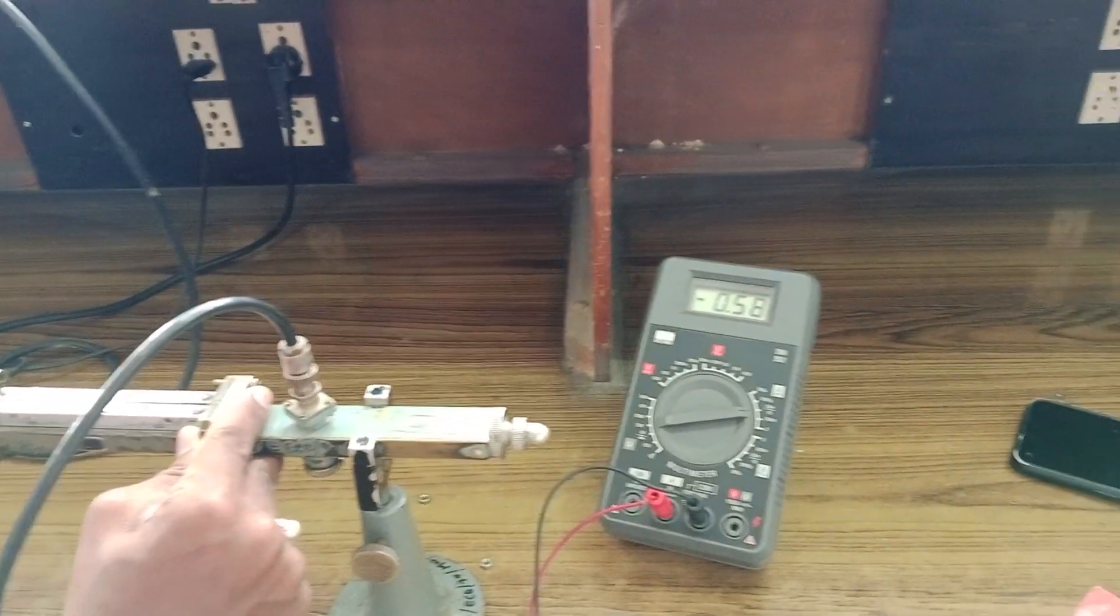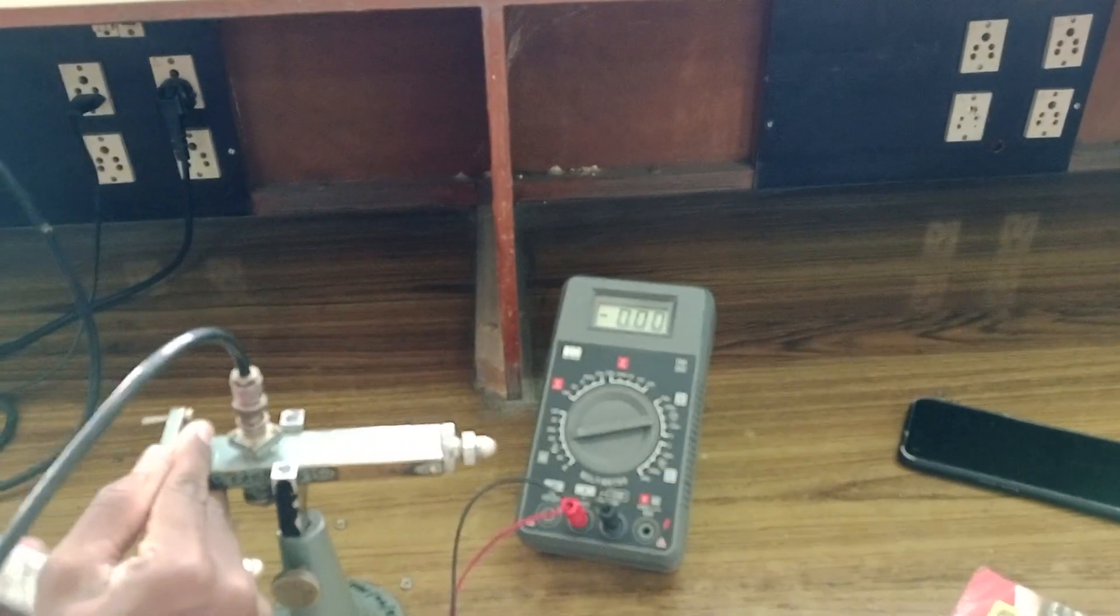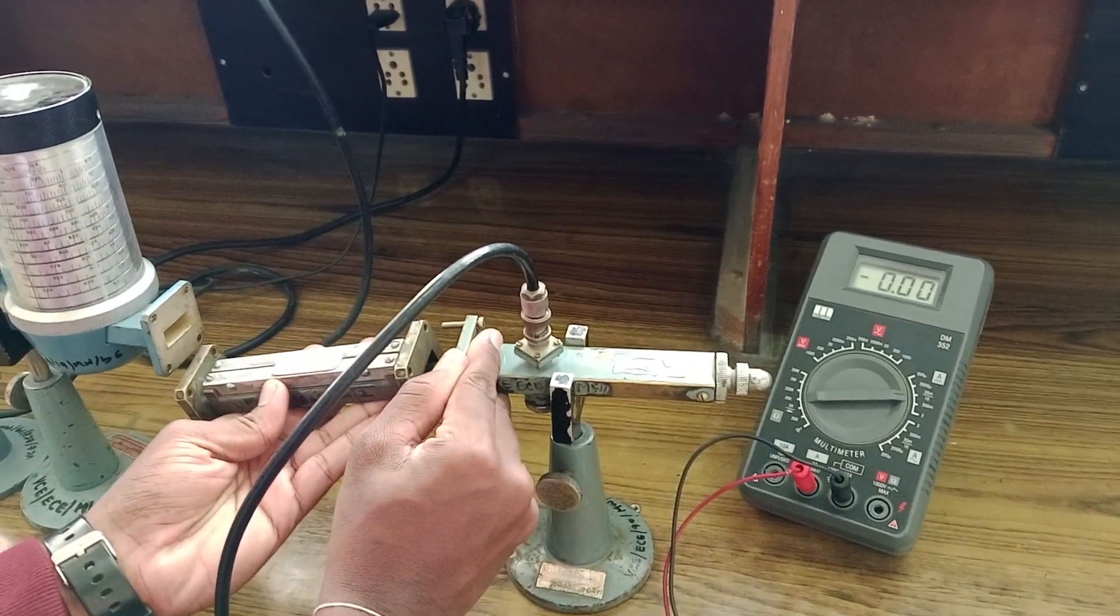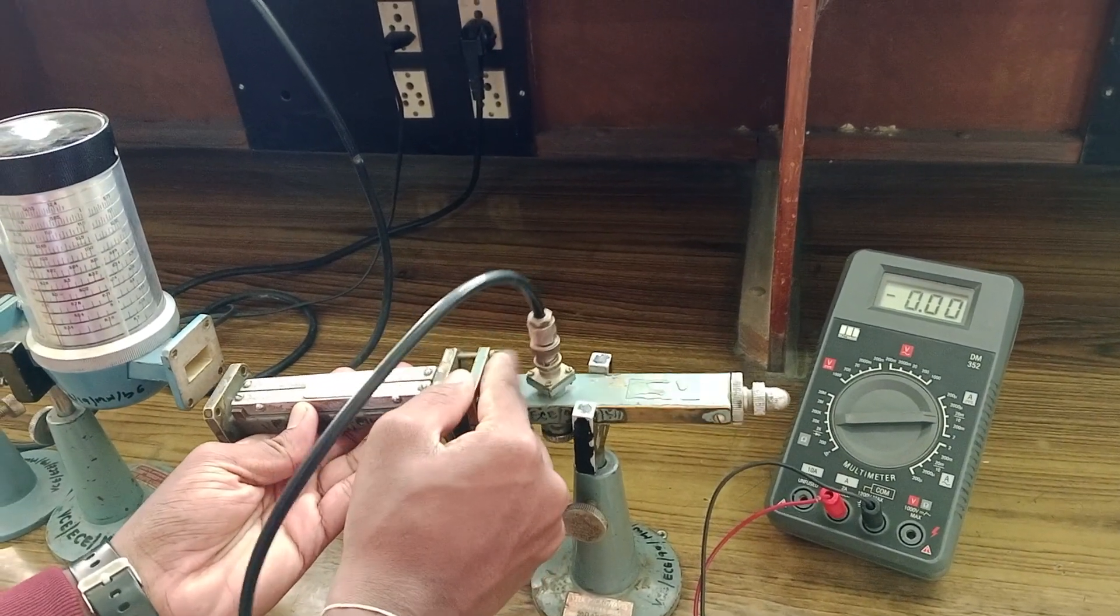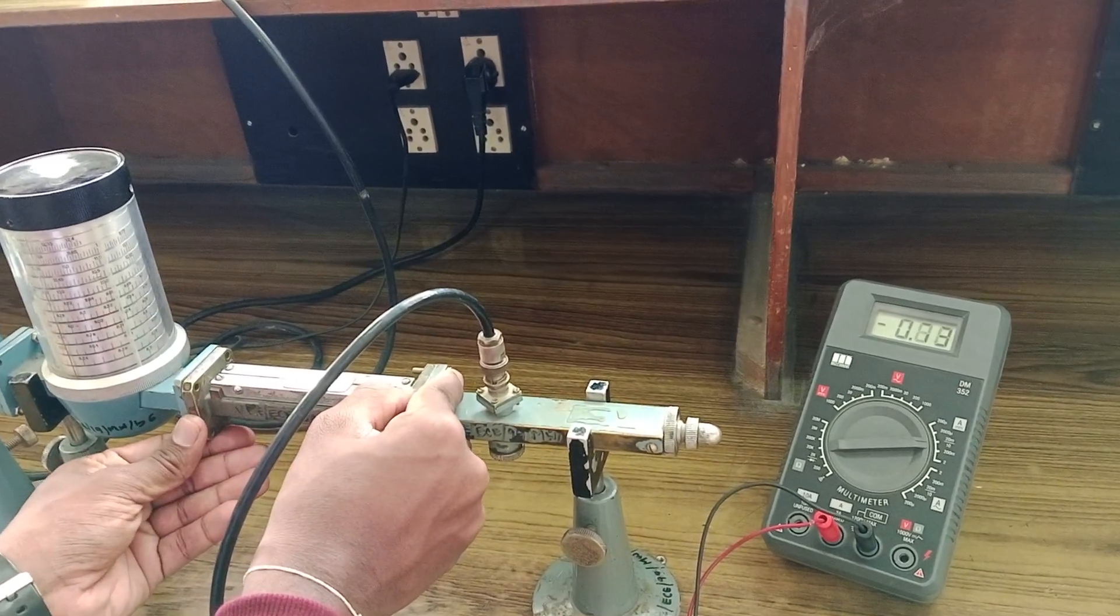Once you are done with this, you have to take the reading. If you see, it is 0.54. Now I will reverse the direction of the fixed attenuator and take the reading again. It is around 0.69.